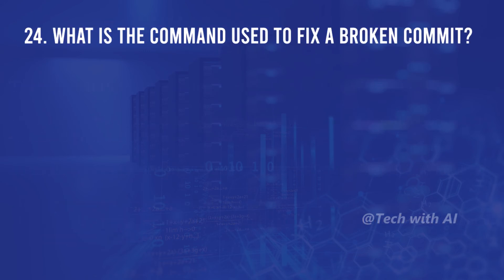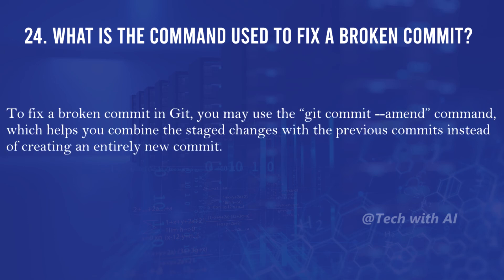What is the command used to fix a broken commit? To fix a broken commit in Git, you may use the git commit --amend command, which helps you combine the staged changes with the previous commits instead of creating an entirely new commit.